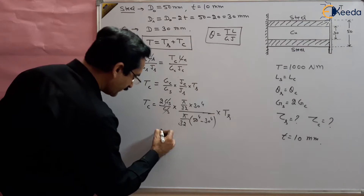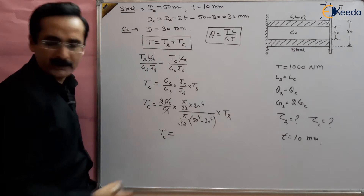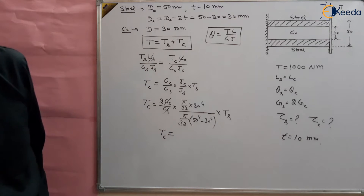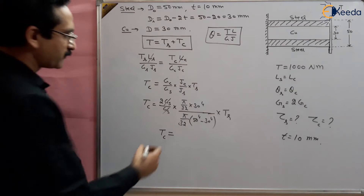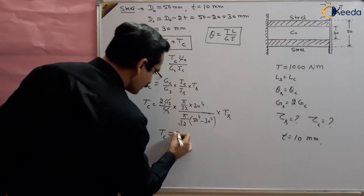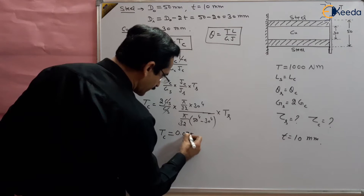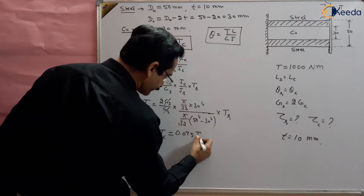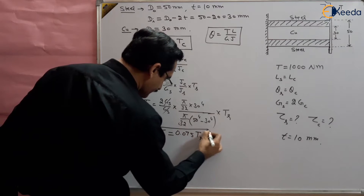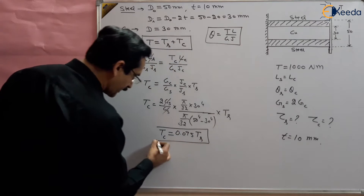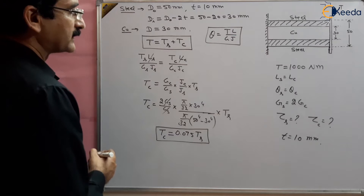Solving this relation we get T_c = 0.075 × T_s. This is the relation obtained between T_c and T_s.